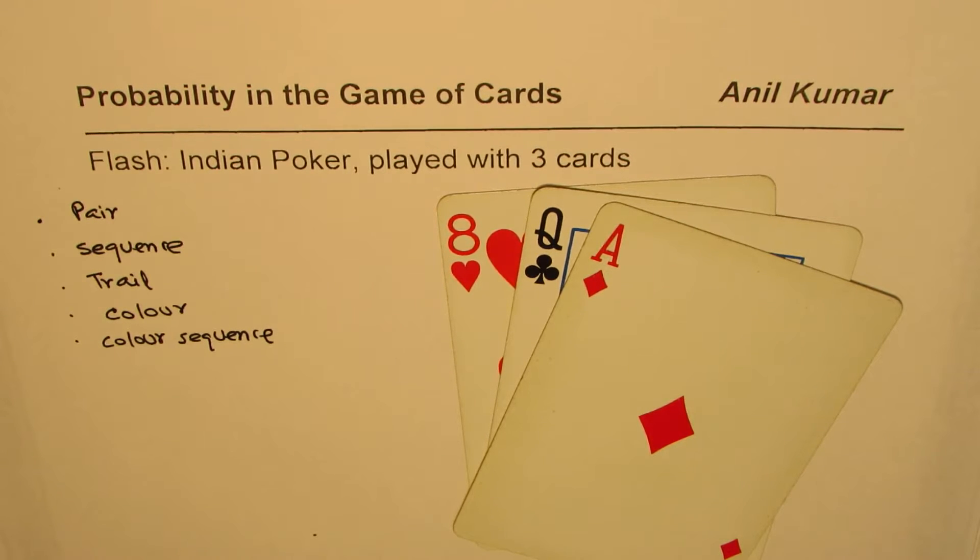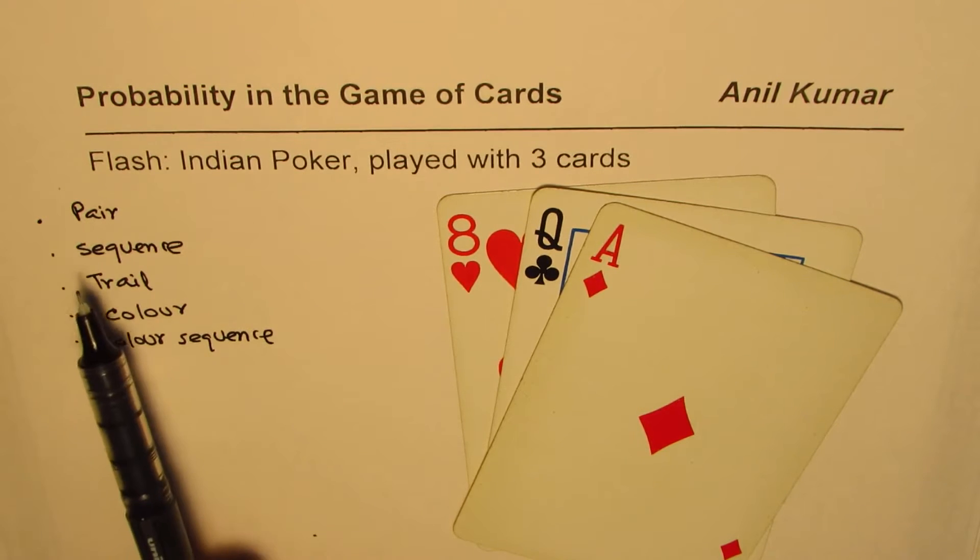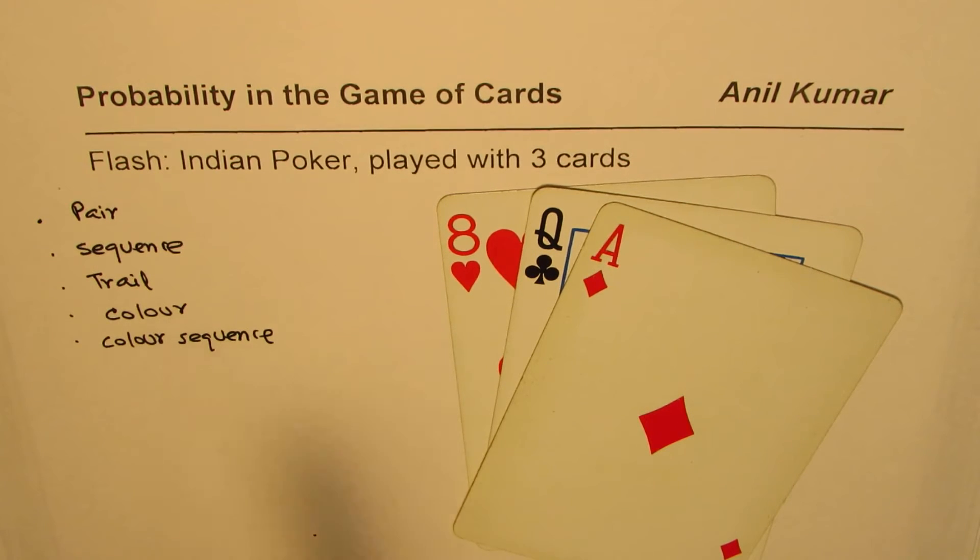So the order is not correct here, but these are different types of cards which we normally sought for in this game of flash. But most of the time we land up with some combination which is neither a pair, neither a sequence or a trail or a color.